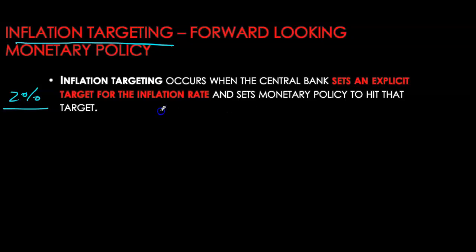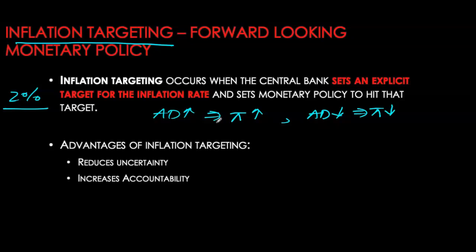Aggregate demand can be stimulated to put upward pressure on inflation, or dampened to put downward pressure on inflation. Advantages of inflation targeting include reducing uncertainty in the economy, since everyone knows the inflation target, and making monetary policy very transparent. If the Bank of Canada maintains the inflation target, everyone can observe that. This transparency also makes the central bank accountable — if policy makers are unable to achieve the inflation targets, they can be replaced.